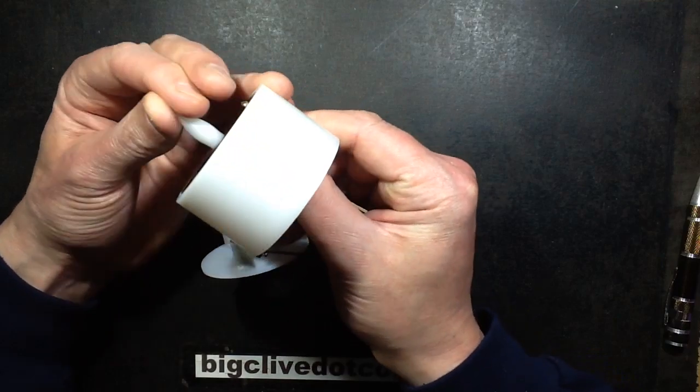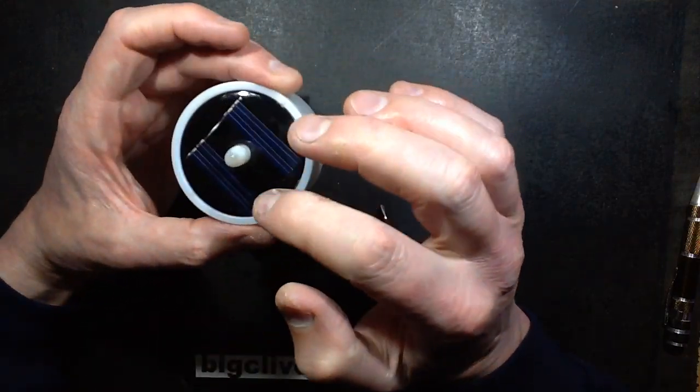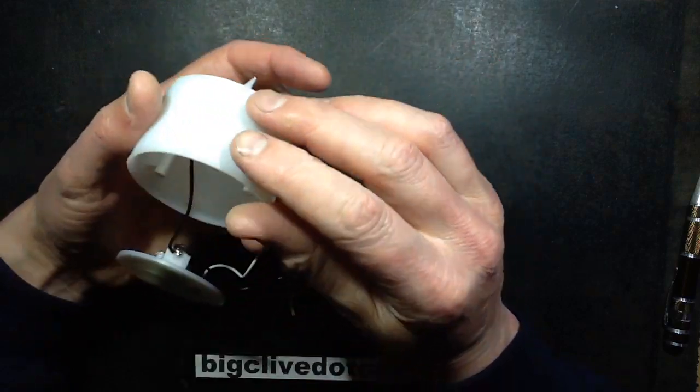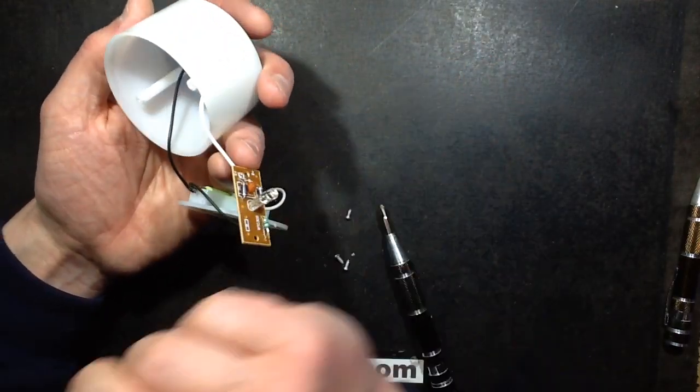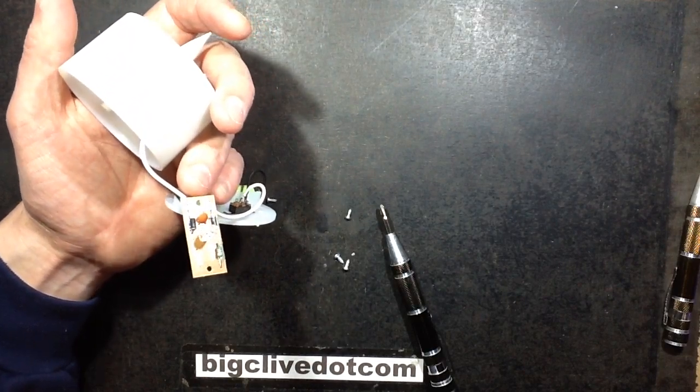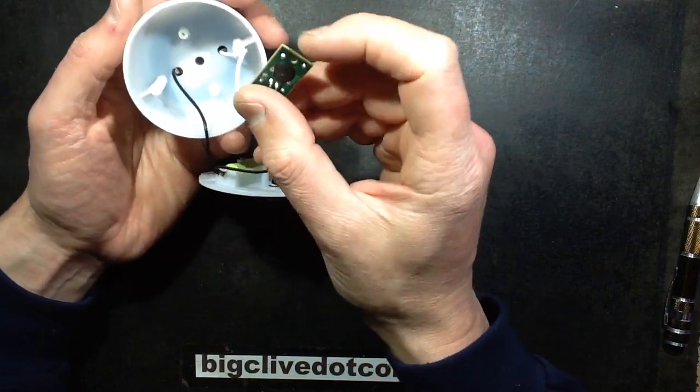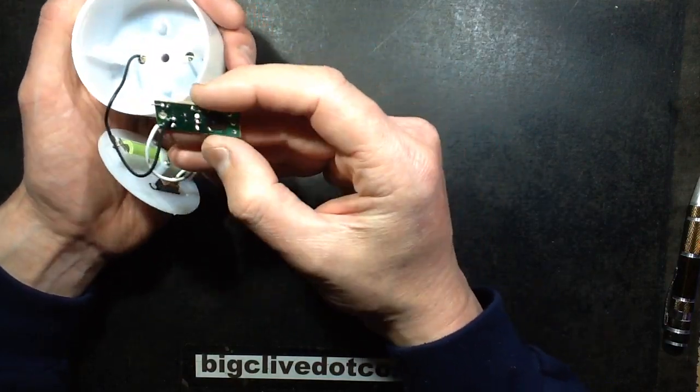This plastic flame looks as though it's actually molded right in here with the circular solar panel just sat over the top. In a way they could have used one of those little four pin chips and done away with one of these diodes.